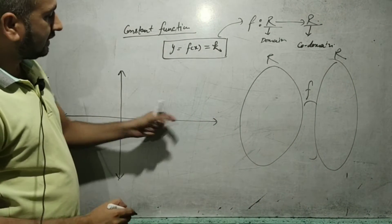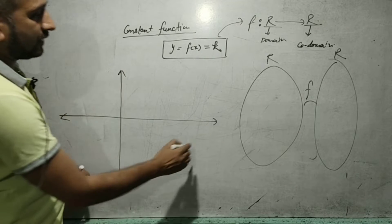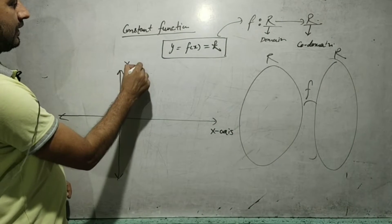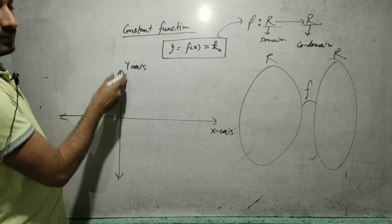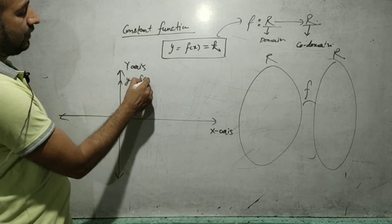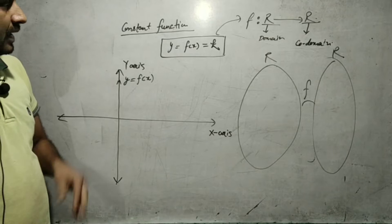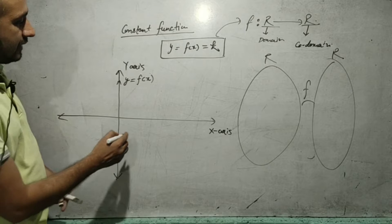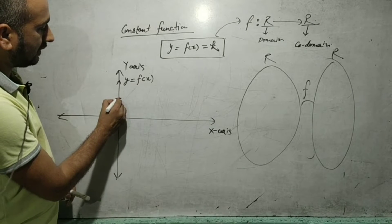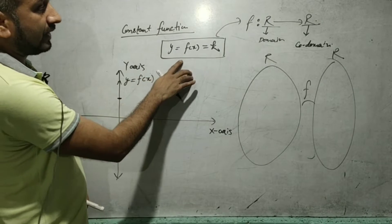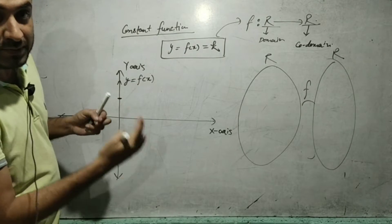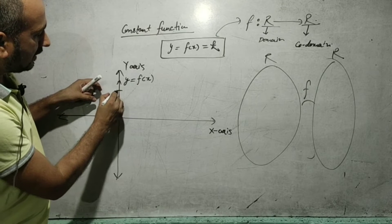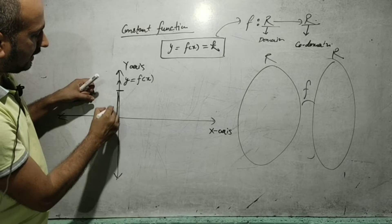Here is the real axis, which is the x-axis, and the y-axis. The y-axis always correlates with y = f(x). If x equals some value, y = f(x) = k, meaning y is constant. This distance from the origin I have taken as small k.